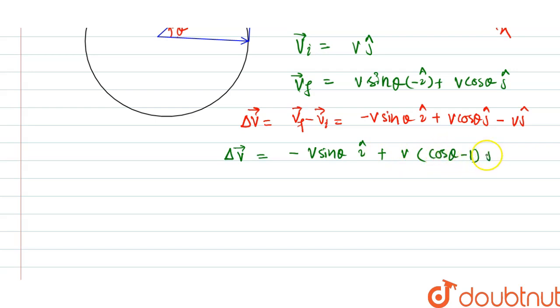Now its magnitude, the magnitude of change in velocity equals root of minus v sine theta whole square plus v square of cos theta minus 1 square. We can take common this v square term, so it will be only v on the outside of the square root, so sine square theta plus opening the bracket cos square theta plus 1 minus 2 cos theta.